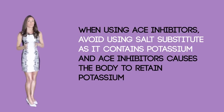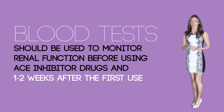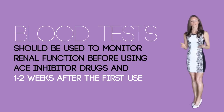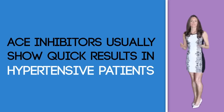Other considerations when using ACE inhibitors: avoid using salt substitutes, as they contain potassium and ACE inhibitors can cause the body to retain potassium. ACE inhibitors are meant for long-term use — even if blood pressure is under control, stopping the medication can be a health risk. Blood tests should monitor renal function before using ACE inhibitors and one to two weeks after first use. ACE inhibitors usually show quick results in hypertensive patients, but for heart failure treatment it can take weeks to months to see improvement.